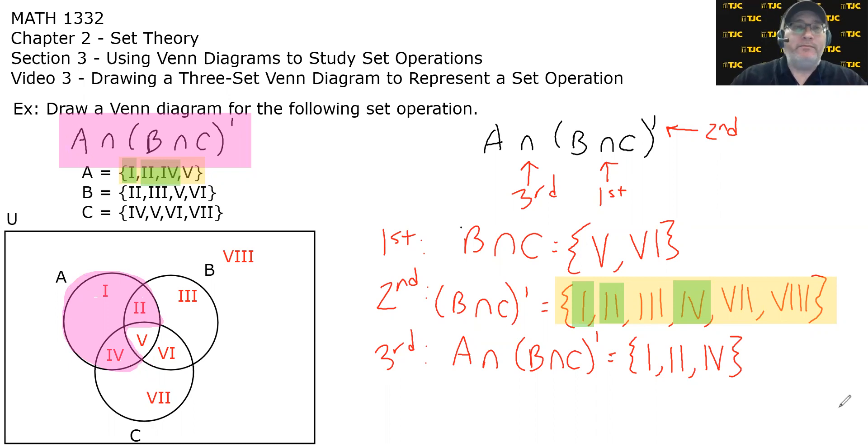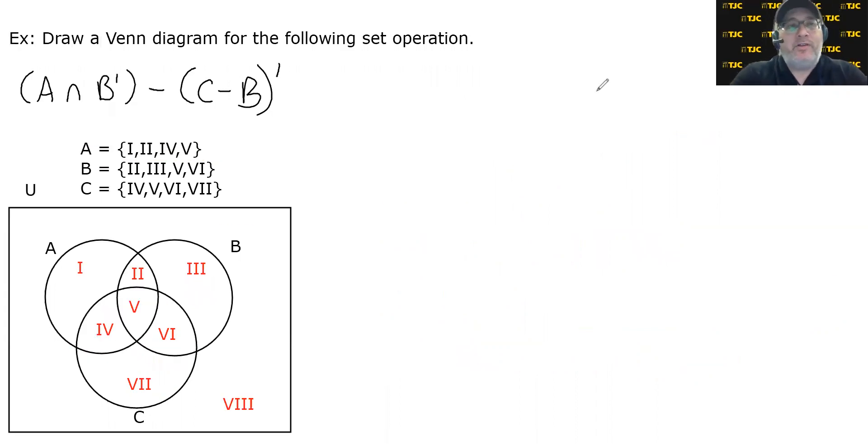Let's take a look at one more. Draw the Venn diagram for the following set operation. A intersect B complement as a set minus the complement of C minus B. Now, I don't know what the answer to this is. I'm going to attempt to do this one verbally, and then we'll see if I'm right by going through it algorithmically. Let's get into my brain for a second.